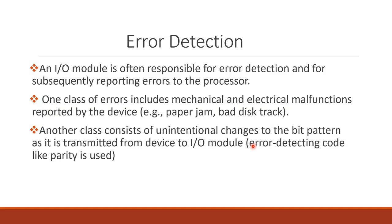The second class of errors involves unintentional changes to the bit pattern as data is transmitted from the device to the IO module. Device data transferred to the IO module may have changes. For this class of errors, we normally use error-detecting methods like parity. We use a parity bit — an 8-bit code is used with 7-bit characters and a parity bit to check for errors.